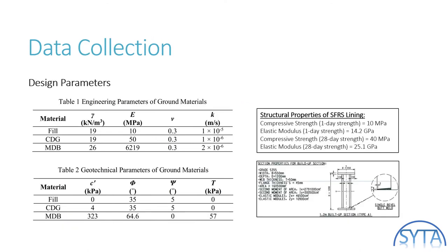The design parameters to be adopted in numerical models are listed here, including both the engineering parameters and the geotechnical parameters of the ground materials. In addition, properties of installed structures are also input into models, such as the steel-fiber-reinforced shotcrete lining in 1-day strength and 28-day strength. The sectional properties of the temporary traffic deck are also calculated based on the information of structural members.